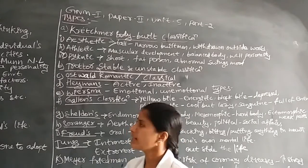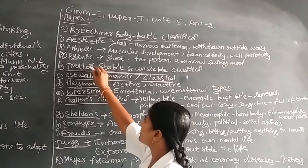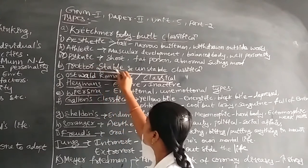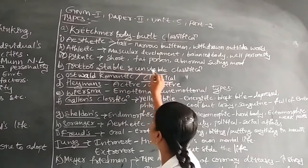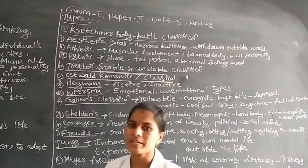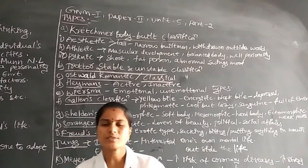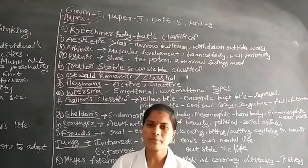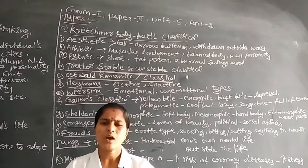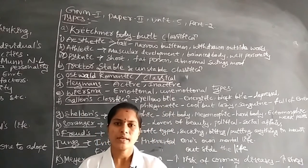Next, another classification is the stable and unstable personality classification. In stable and unstable personality, we first discuss the stable personality. Stable persons have stable thinking, stable feelings, and stable attitudes.